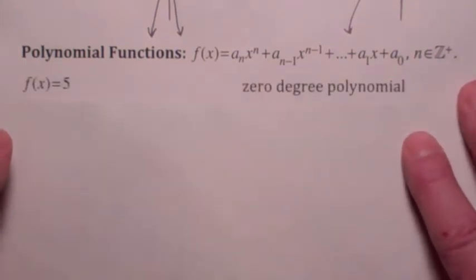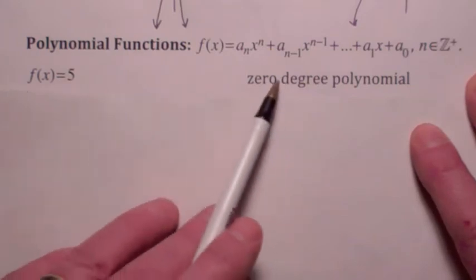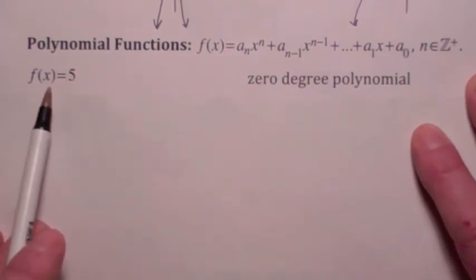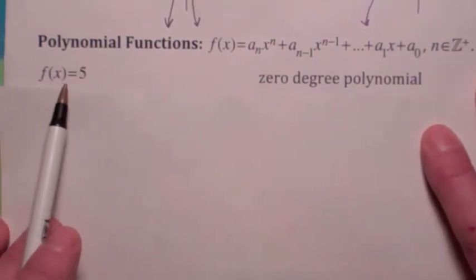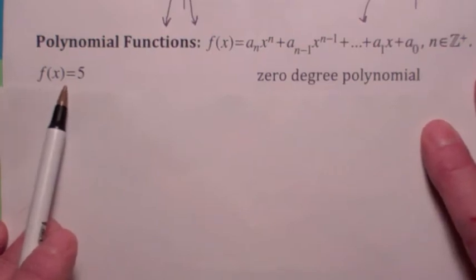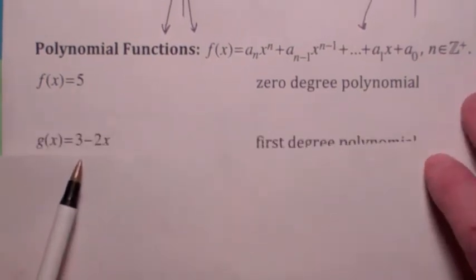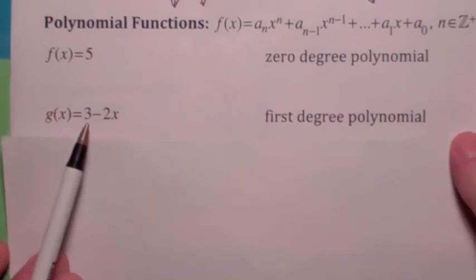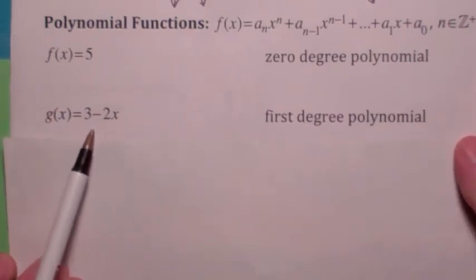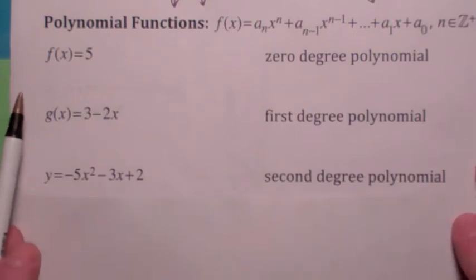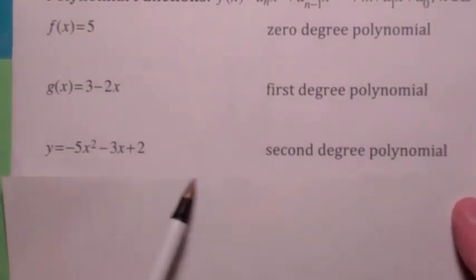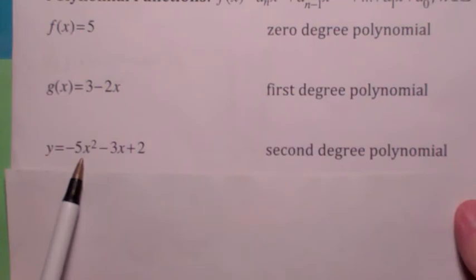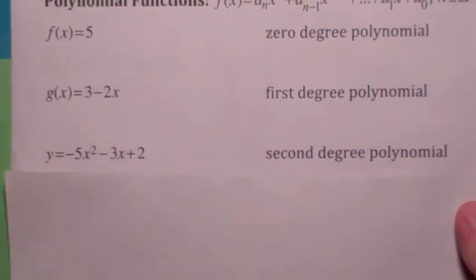Anyway, so a simple example, probably the most simple example of a polynomial function, would be a zero-degree polynomial function. I don't think we'd ever call it this, but we just call this a constant function. Linear functions can be thought of as polynomial functions of degree 1. And similarly, we talked quite a bit about quadratic functions last quarter. Those are just second-degree polynomial functions.